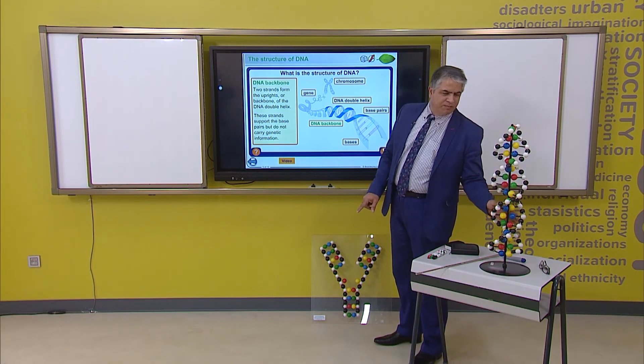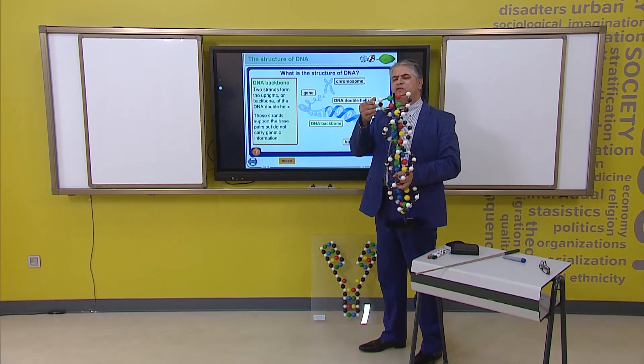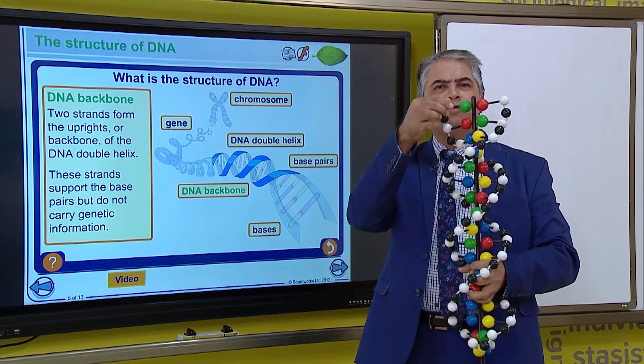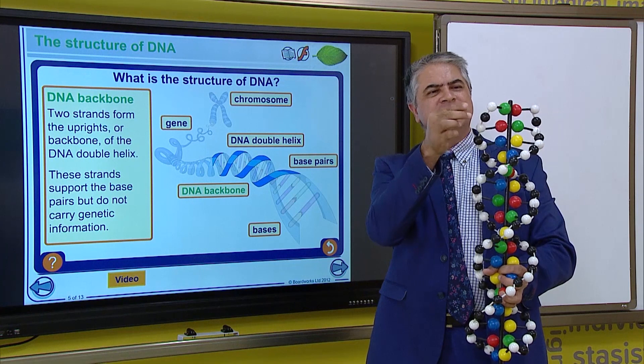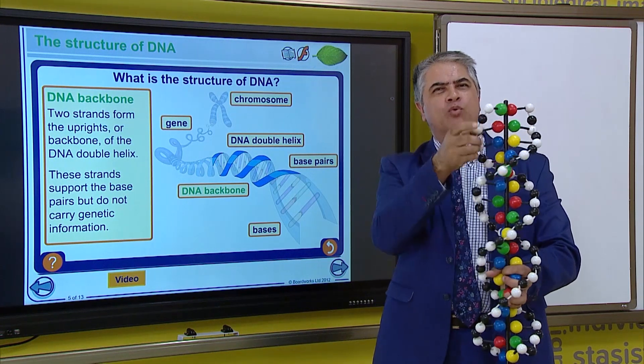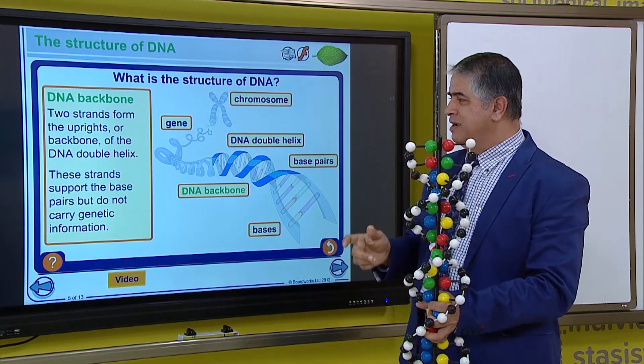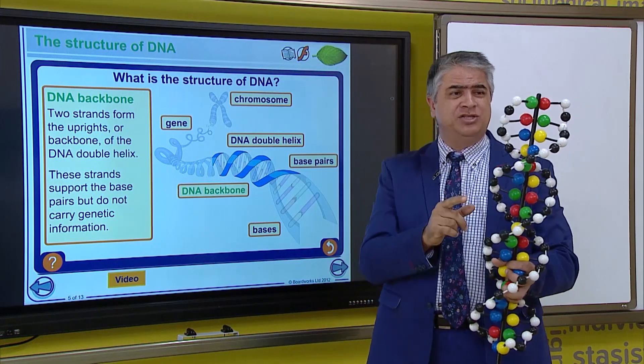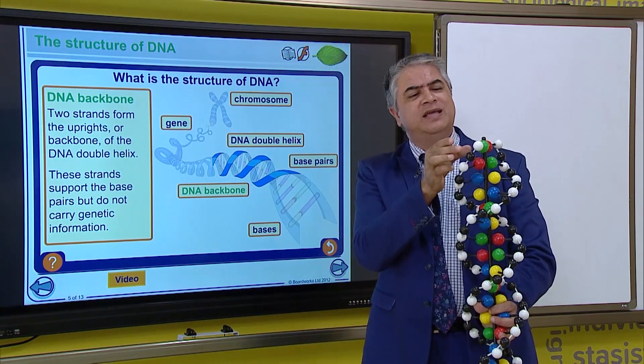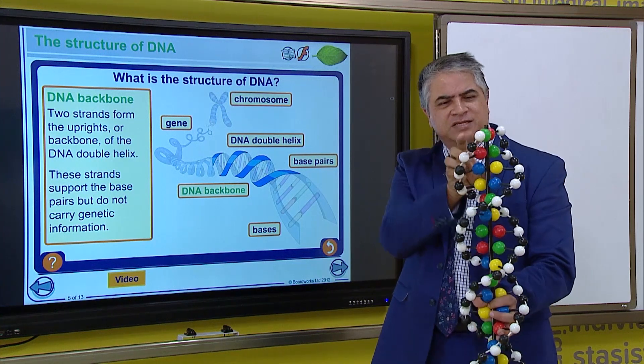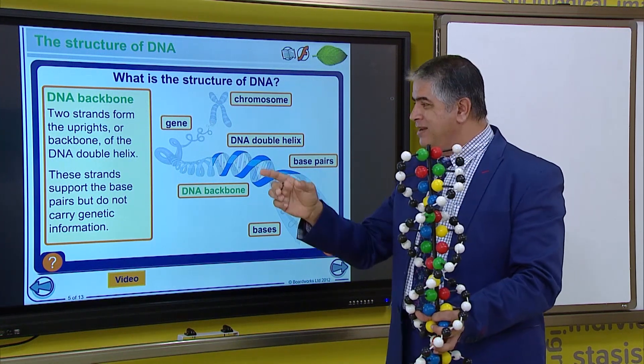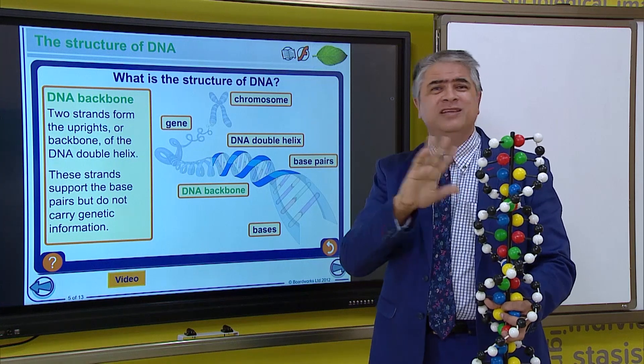So, this is the backbone. It's made up of ribosugar and it's made up of phosphate. And this is the backbone, which keeps stability. But the important part that you need to know is that it supports the bases in this whole structure. And it doesn't have any genetic information.